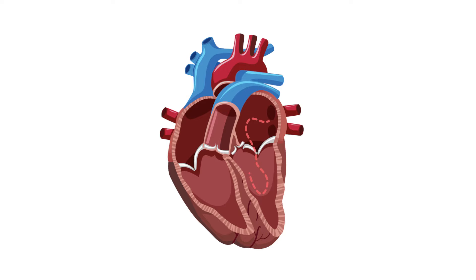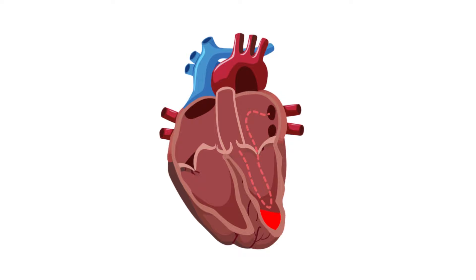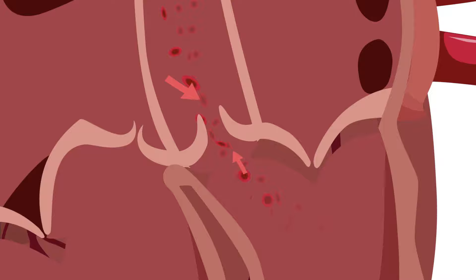Regurgitation or insufficiency is when your valve flaps are leaky and don't close properly. This lets blood leak back through your valve and can make your heart work harder to circulate blood around your body.